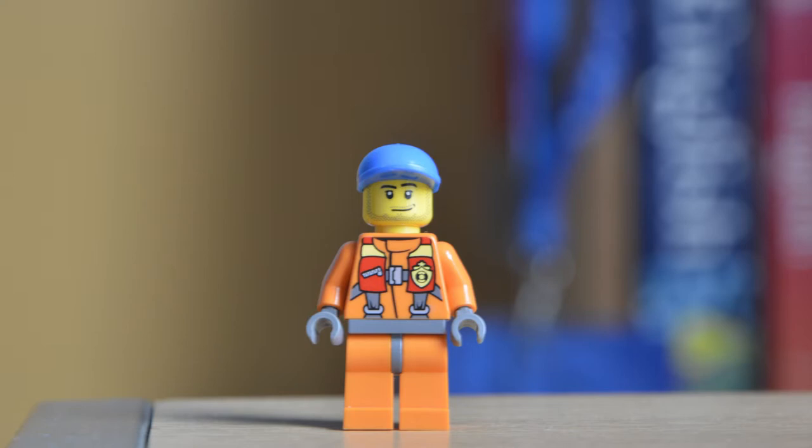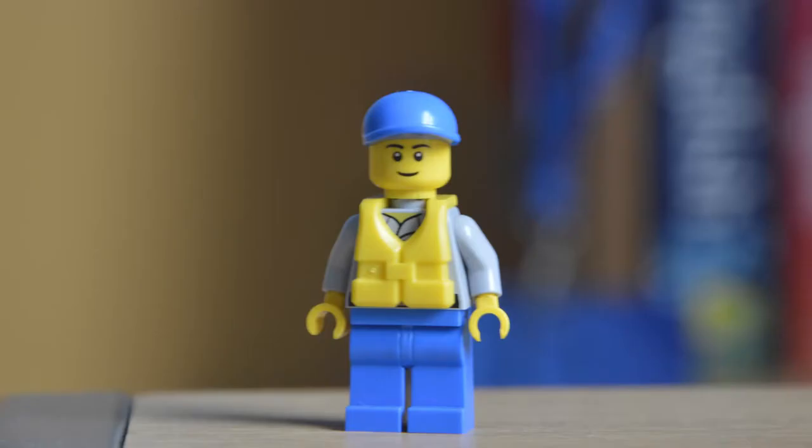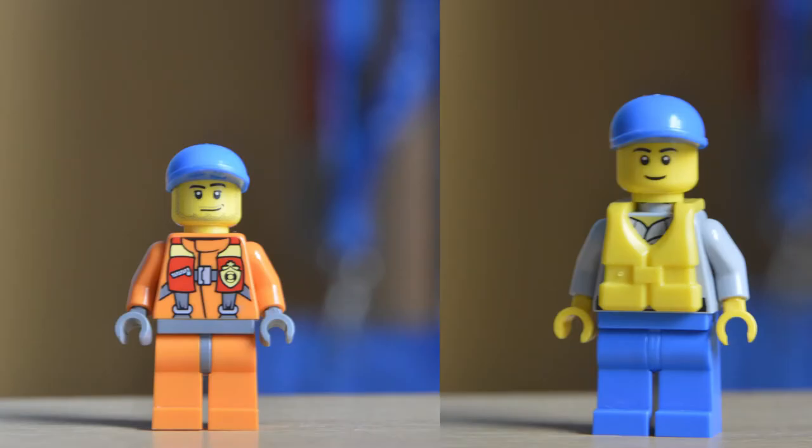And then the other guy is very similar, but he has a grey top. I'm guessing he's a higher rank because he's got this shirt on, and then he's got blue trousers. One inconsistency is that the driver actually has a buoyancy aid printed onto his body, whereas the boat diver has a separate one.